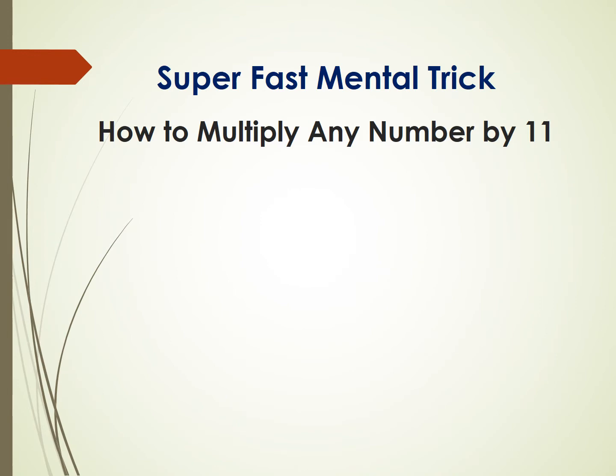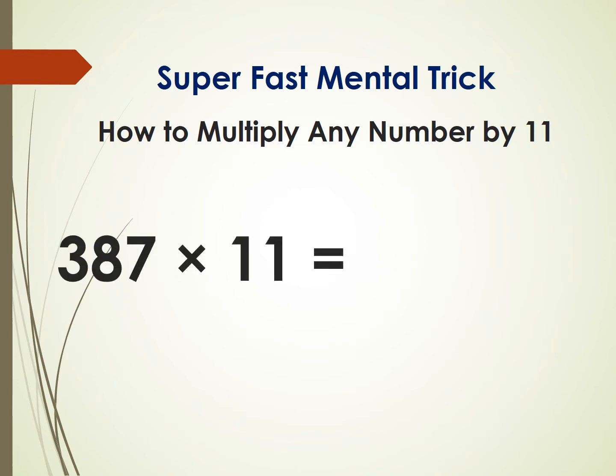Next example: 387 times 11. Write 3 and 7, but in this case provide a space for two digits, since you're multiplying a three-digit number by 11 and will have a 4-digit answer. Now add the first two inner digits — 8 and 7 — the answer is 15. Write 5 and carry 1 to the next digit.